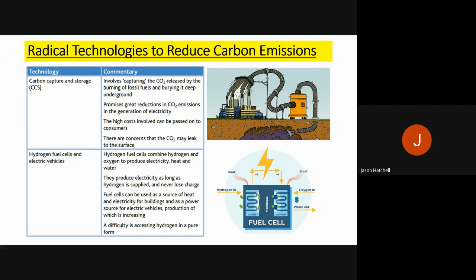In terms of hydrogen fuel cells, these can be combined with oxygen to produce electricity, heat, and water. They produce electricity as long as hydrogen is supplied and never lose charge. Fuel cells can be used as a heat and electricity source for buildings and for electric vehicles, the production of which is increasing. In the UK, the use of electric vehicles has dramatically increased in the last five years. The UK government has a target of all-electric vehicles by 2040, and the Scottish government by 2035 — reducing nitrogen oxide and CO2 emissions from transport.